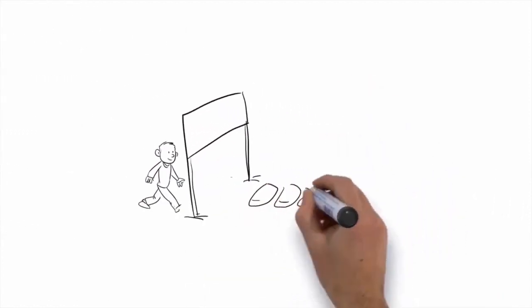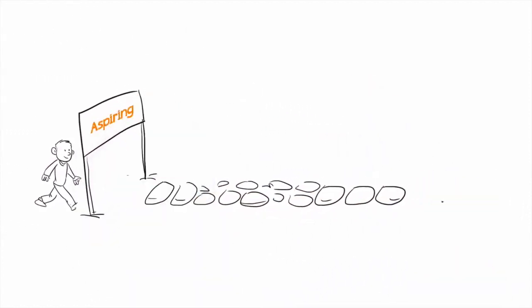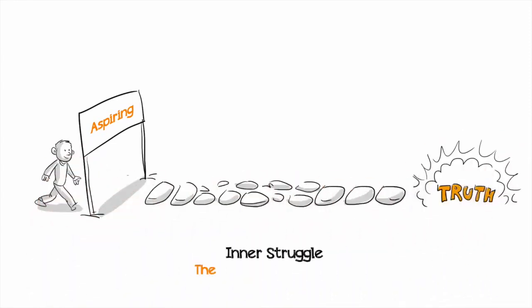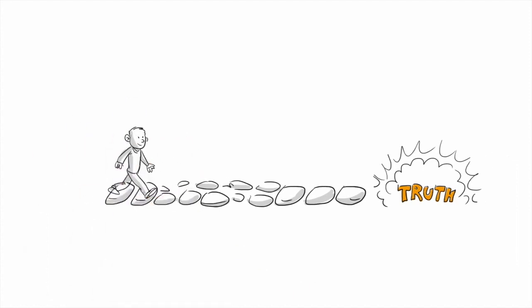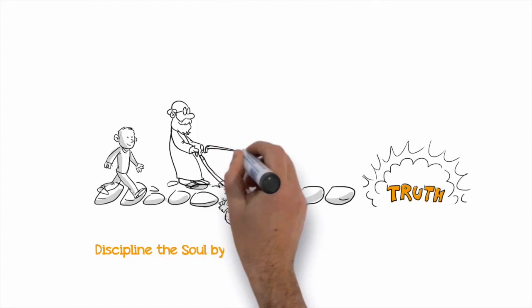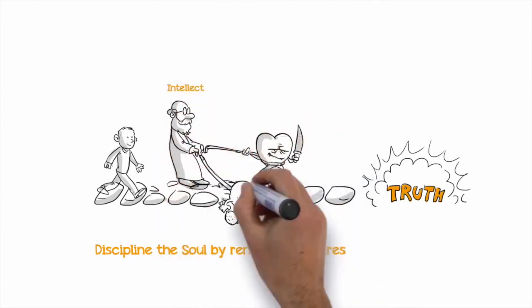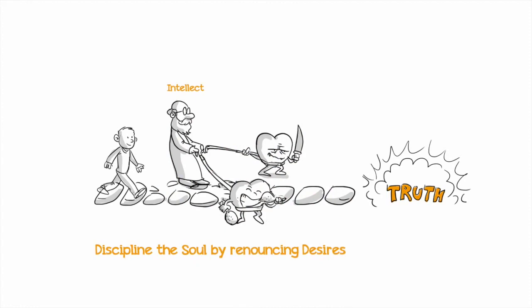The path to a disciplined soul starts with aspiring, the desire to come to the truth through inner struggle. One must struggle to keep the soul under the command of the intellect. The only way to discipline the soul is by denying destructive pleasures through renouncing one's desires.